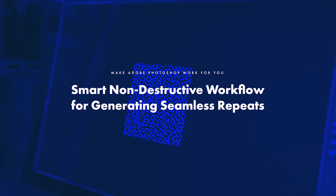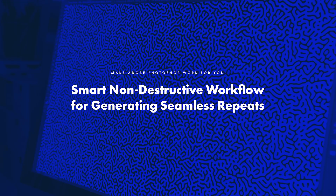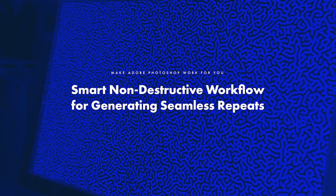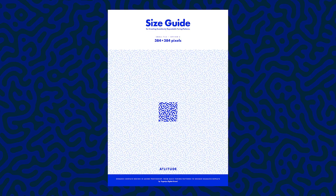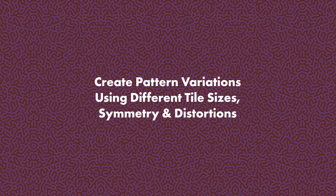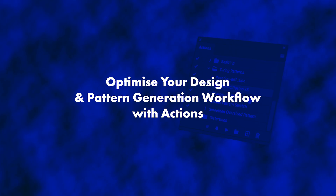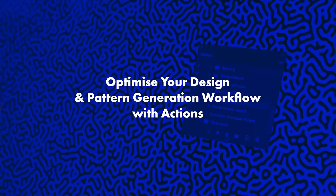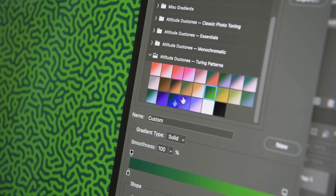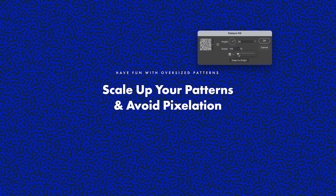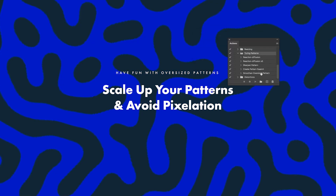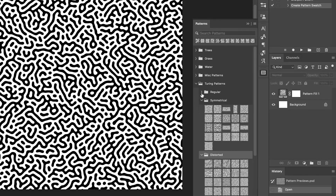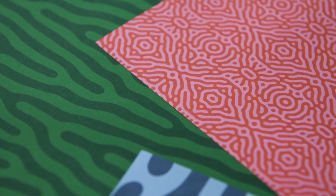Beyond the basic technique for generating Turing patterns, in this class you will learn a smart, non-destructive workflow for generating seamlessly repeatable pattern tiles; techniques for creating patterns with different characters by using different tile sizes, exploring symmetry and structural distortions; how to speed up your workflow with sets of handy actions for generating patterns and creating pattern swatches; how to apply your patterns and color your surface designs; how to create designs with perfectly smooth oversized patterns in Adobe Photoshop and avoid pixelation; and tips for creating and managing your pattern swatches and exporting your surface designs.